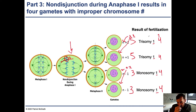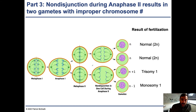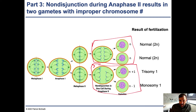If a trisomy 1 gamete fertilizes an egg with a normal number of chromosomes, you end up with three copies of chromosome 1 — that's why it's called trisomy 1. If the monosomy gamete fertilizes a normal egg, you would only have one copy of chromosome 1, called monosomy 1. You can also have non-disjunction during anaphase 2, producing one gamete with one extra chromosome 1 and one lacking chromosome 1, again resulting in trisomy 1 or monosomy 1 after fertilization.